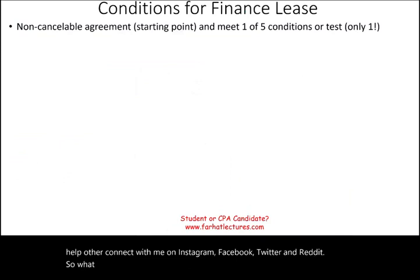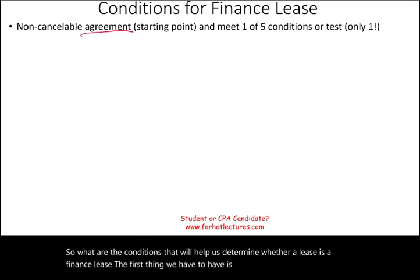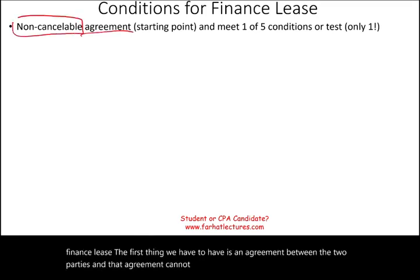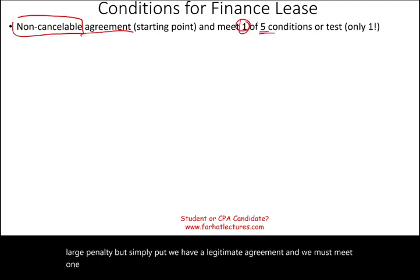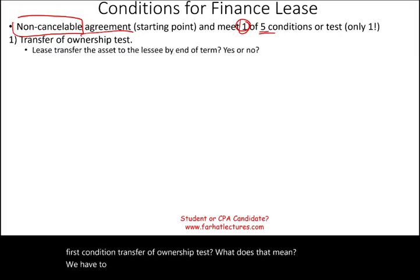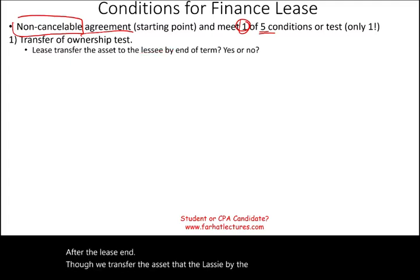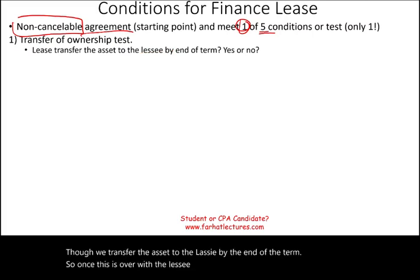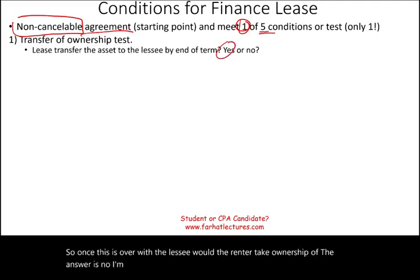What are those conditions? First, we must have a non-cancelable agreement between the two parties — or if cancelable, there's a large penalty. And we must meet one of five tests. The first condition is the transfer of ownership test: after the lease ends, does ownership of the asset transfer to the lessee? If the answer is yes, we have a finance lease. If no, we fail this test. Think of renting an apartment — ownership goes back to the owner — versus leasing a car where you end up with the keys.